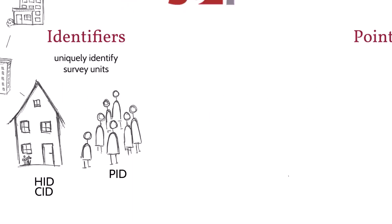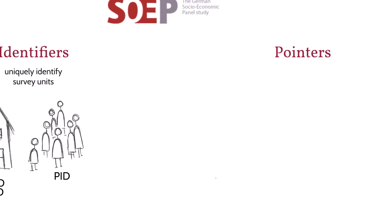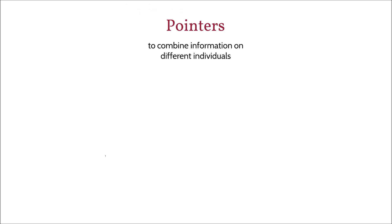Besides these identifiers, selected datasets also contain pointers. Pointers can be used to combine information on one person with information on another person. Essentially, pointers contain the individual identifiers for other people in the dataset. Let me show you which pointers we provide and where you can find them.